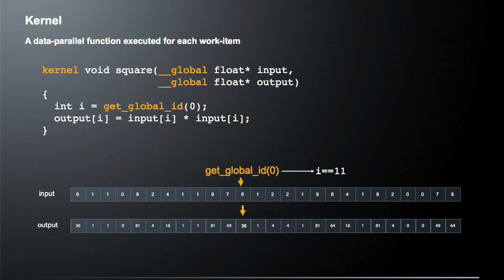Let's look at how this works in more detail. We have an input vector shown at the bottom of the screen. We call getGlobalID for dimension zero. Because remember, we could have a one-, two-, or three-dimensional domain. Let's say it returns position 11, which points to a value of 6 in the input array. We multiply 6 times 6 to get 36 and write that to the output. The neat thing about OpenCL is that every single input element has a work item associated with it, so all items are processed in parallel because they're completely independent.